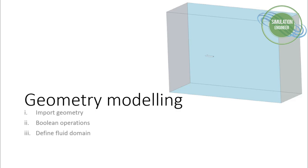It's an IGS file which I will import, and then I will perform a boolean subtraction to reduce the size of the computational domain. Because the body is fully symmetrical, we'll be solving just half of the domain — half of the body — using half of the computational domain.